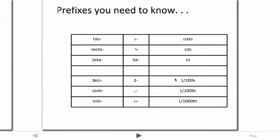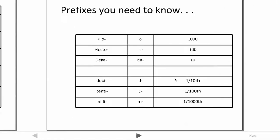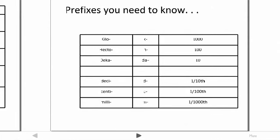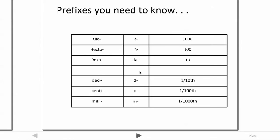The reason the metric system is great is you can use prefixes to denote how many units there are, by factors of 10. Instead of just a gram, if something is 10 grams, it's a decagram — abbreviated dag. A thousand grams is a kilogram, abbreviated with a lowercase k.